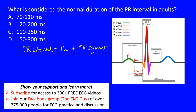The normal duration of the PR interval is between 120 and 200 milliseconds — that's choice B in this case. You may also hear it expressed as 0.12 to 0.20 seconds. Both represent the same value, so remember either form.